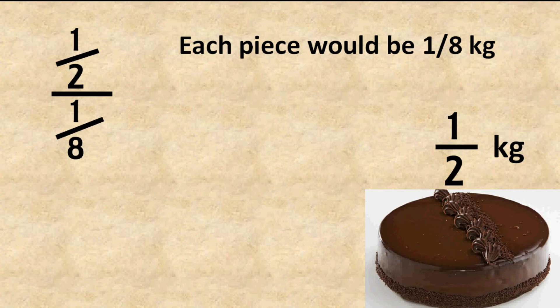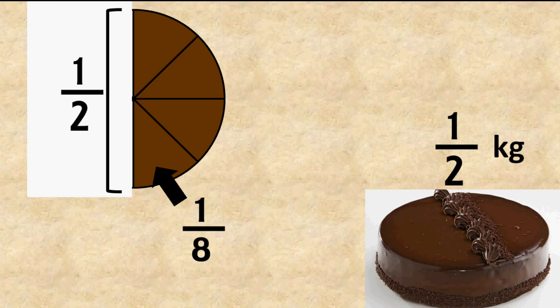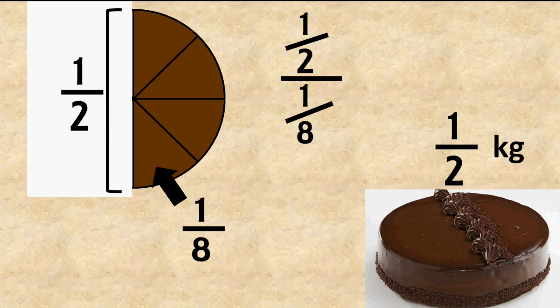How many pieces would we get? That's one-half divided by one-eighth. We are doing division, not multiplication. Here is the half kg cake divided into many pieces, each weighing one-eighth kg. How many pieces are there? Four pieces. But how do we calculate it — one-half divided by one-eighth?